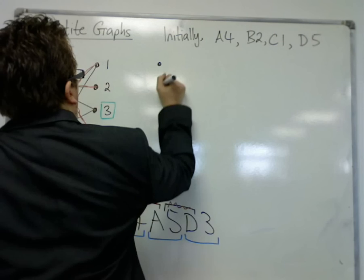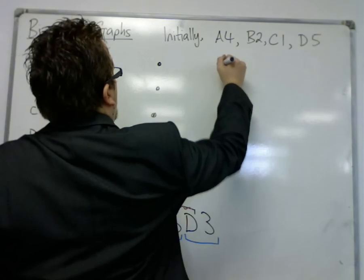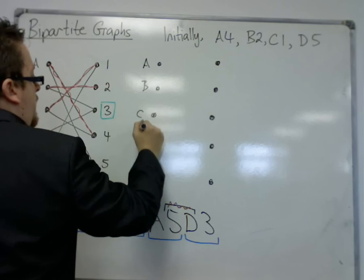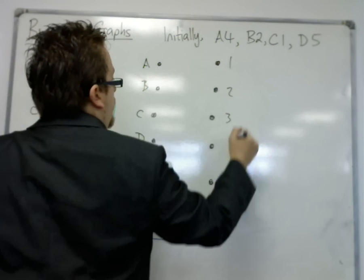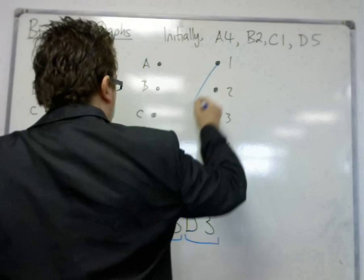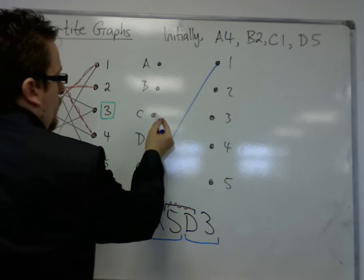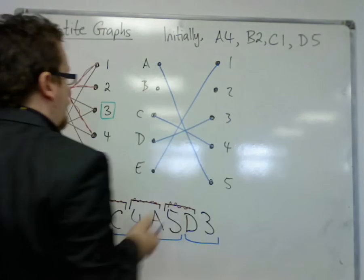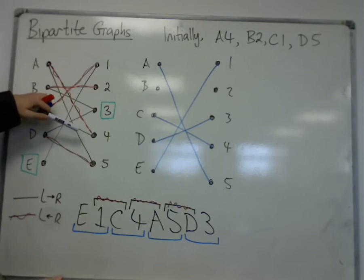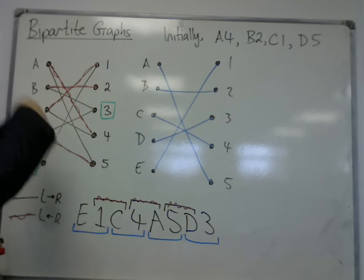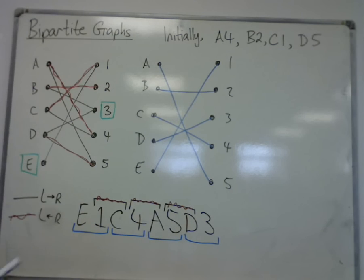So what I have now, if I redraw the bipartite graph, I'm not going to redraw it entirely. A, B, C, D, E, and one, two, three, four, five. I've got E connected to one, C connected to four, A connected to five, and D connected to three. And the only one that I didn't travel along in my alternating path was B2, so that one remains the same. And now I have a complete matching here, because all of my workers are attached to one of the five tasks.